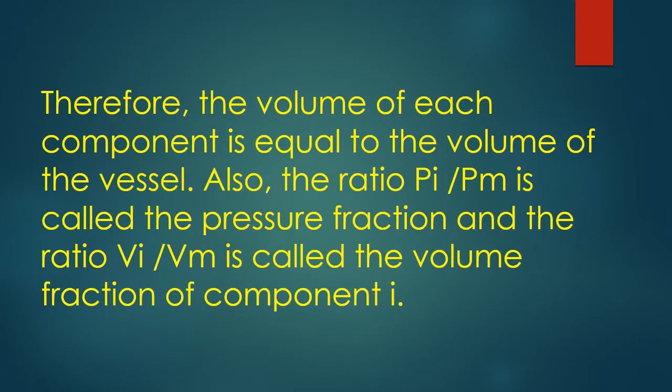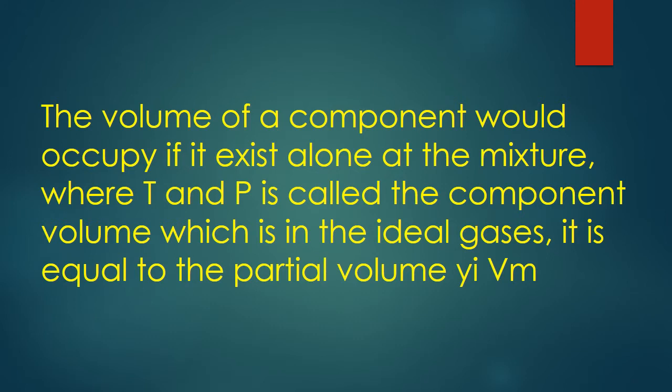Therefore, the volume of each component equals the volume of the vessel. The ratio P_I / P_M is called the pressure fraction, and the ratio V_I / V_M is called the volume fraction of component I. The volume a component would occupy if it existed alone at the mixture T and P is called the component volume, which for ideal gases equals the partial volume Y_I · V_M.